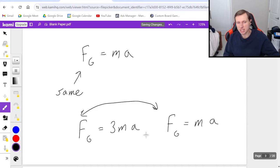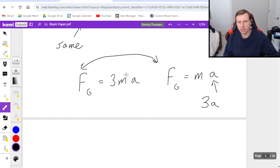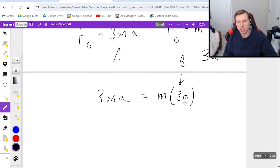If these two things are equal to each other, then the only way this makes sense is if this acceleration right here is three times as much. I'll call it 3a. Because then, since they're equal to each other, 3ma on the left will equal M times 3a on the right. And just remember, this was planet A, and this was planet B, meaning planet B's acceleration is three times as much. So who has the greater acceleration? B does, even though they have the same force.